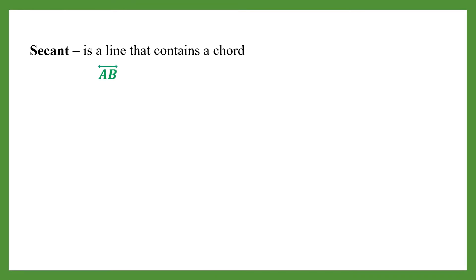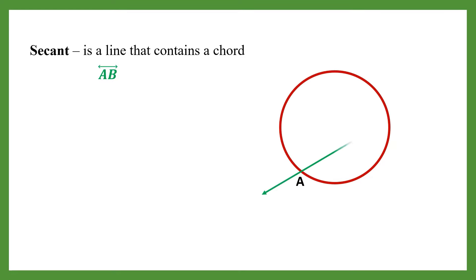A secant is a line that contains a chord. For example, we have line AB. If there is a circle, line AB is a secant. A chord is a line segment from point A to point B, but if it's an extended line, this is considered a secant.